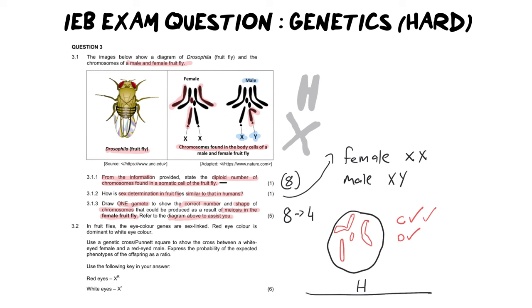Now let's move on to the more challenging application question when it comes to a genetic cross. Now, this particular question says in fruit flies, the eye color gene is sex linked. The moment you hear that, you must go, okay, I'm going to work with X's and Y's. Red eye color is the dominant color then to white. So this is also really important. We'll come back to that soon. It says use a genetic cross or Punnett square to show the cross between a white female and a red-eyed male. Express the probability of the expected phenotypes of the offspring as a ratio. And that's also really important because they're telling you what they want at the very end.